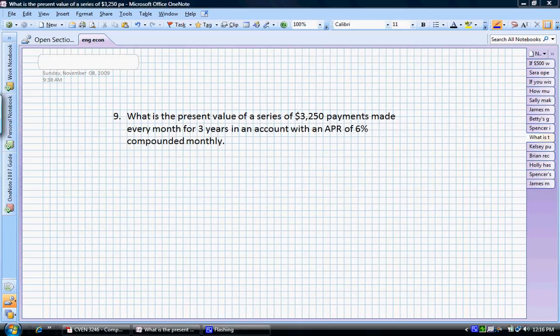Let's solve a pretty quick and easy problem here. We're looking for the present value of a series of $3,250 payments made every month for three years in an account with a 6% APR compounded monthly.